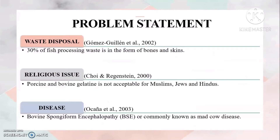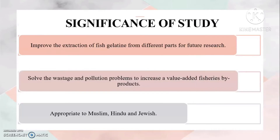Recently, the poultry and livestock industries have led to excessive amounts of waste. About 30% of fish processing waste is in the form of bones and skins. Porcine and bovine sources carry concerns as they are not acceptable for Muslims, Jews, and Hindus. Recent disease outbreaks have also caused decreasing demand for gelatin.